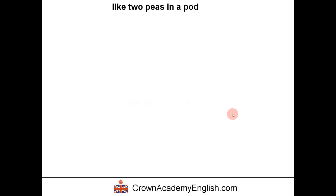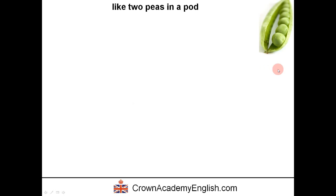The first expression is 'like two peas in a pod.' A pea is a vegetable — I'm sure you all know this vegetable. And this is the pod. So we are saying something is like two peas in a pod.